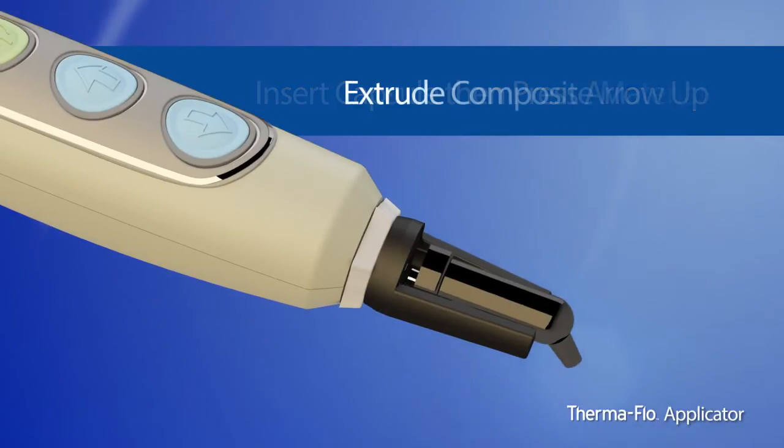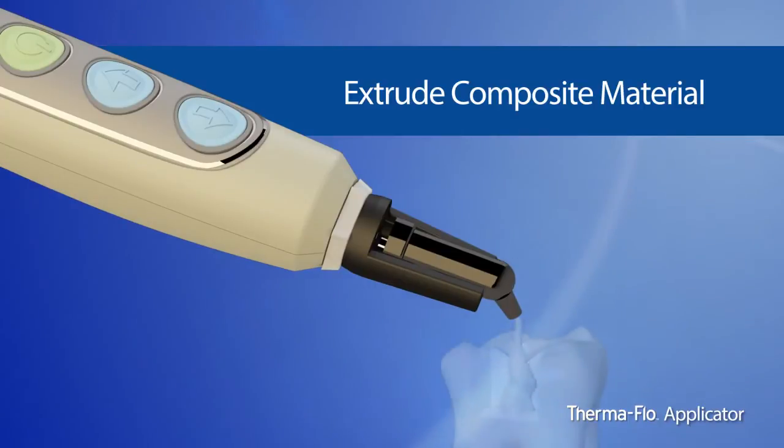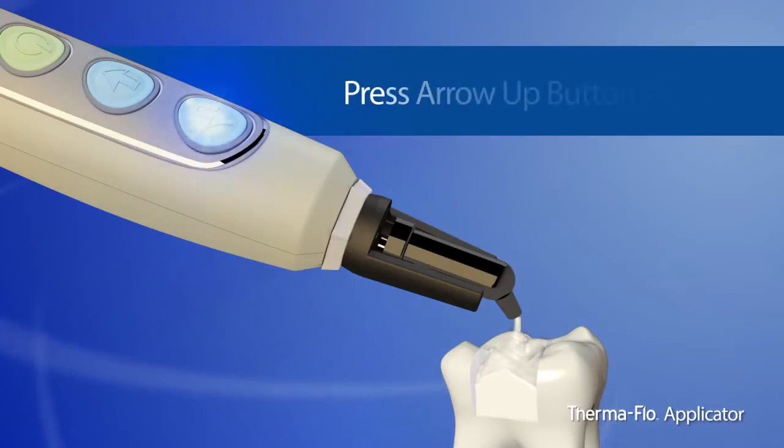Extrude the desired amount of composite material. To extrude the entire capsule, hit the arrow up button twice.